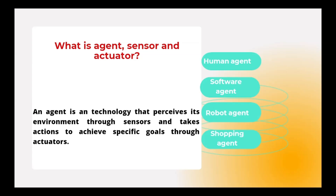An agent is a technology that perceives its environment through sensors and takes action to achieve specific goals through actuators. It senses data from the environment using sensors, and performs actions with the help of actuators. For example, consider a human agent.